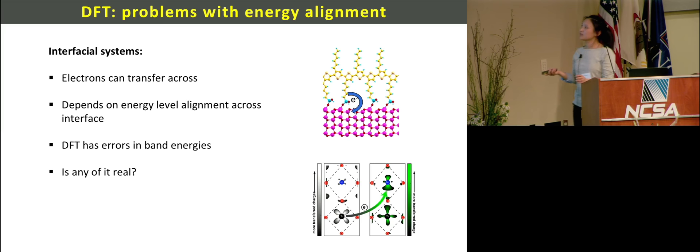The other problem of DFT is band energy alignment. For example, electrons can transfer across an interface - this is polymer and this is nanowire. We want to excite the electron in polymer and move this electron to the nanowire, so we need to know the energy level. The electron goes from high energy to lower energy, but DFT has errors in band energy. Even though we predict the band energy and say that electron can transfer from here to there, we are not 100% sure if this is going to really happen when we actually make the materials.